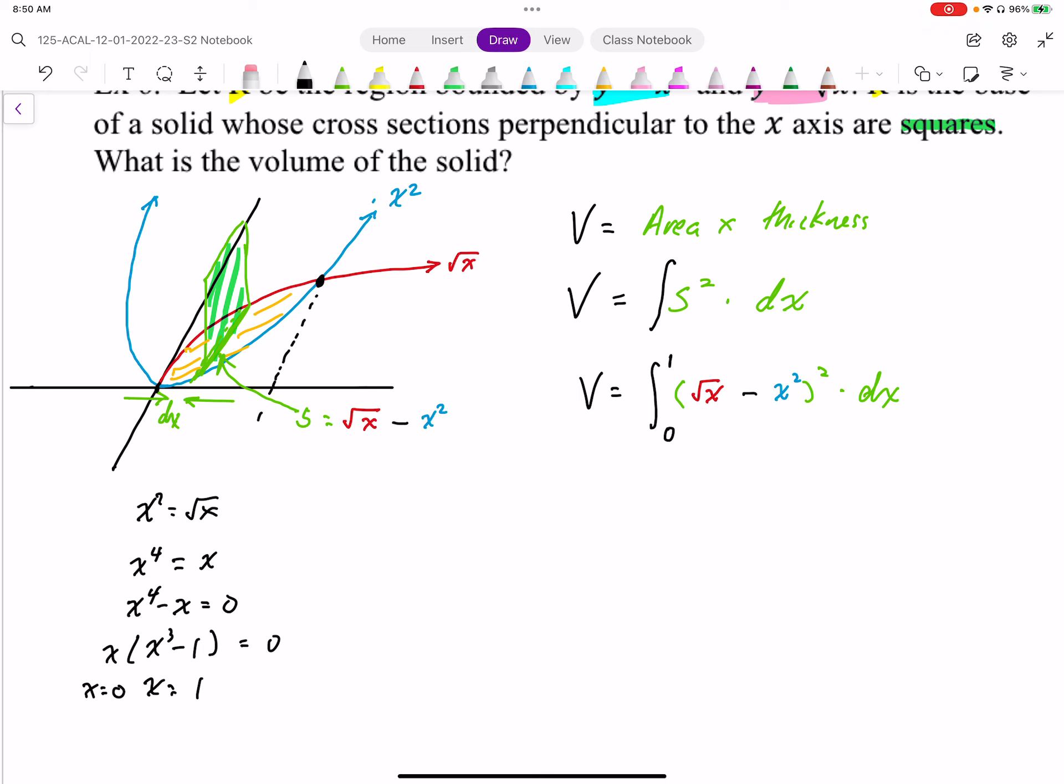So anti-differentiating this, I need to expand this first. I'm going to expand this becomes x. x squared times root x is going to be x to the power 5 over 2. And I'm going to have two of them. So 2x to the power 5 over 2. And then plus x squared times x squared is x to the fourth. And then I'm going to give that thickness dx.